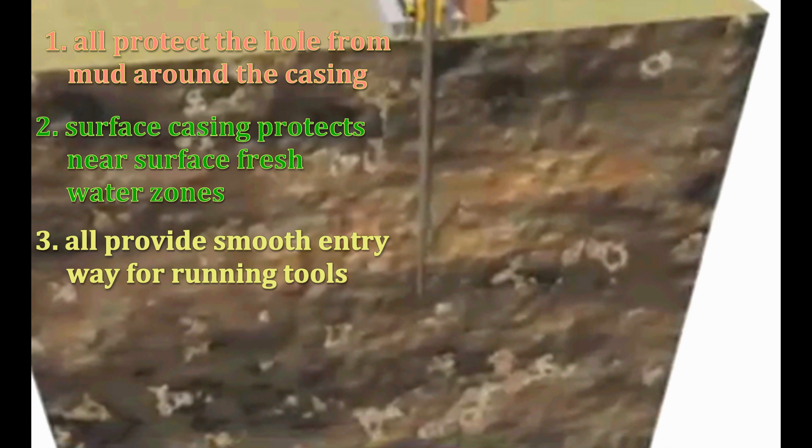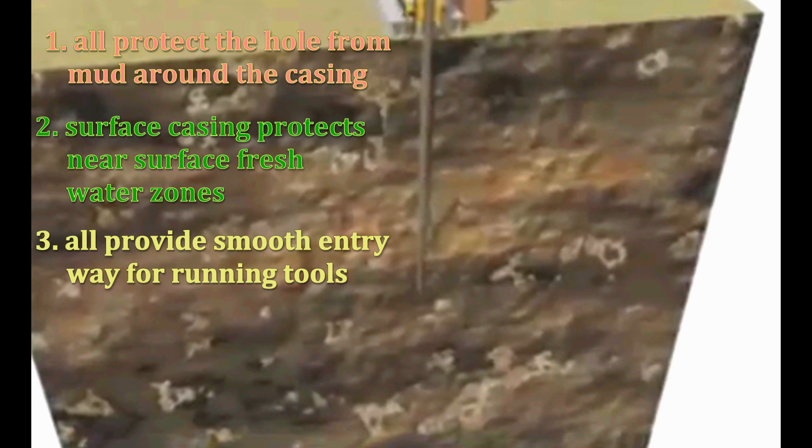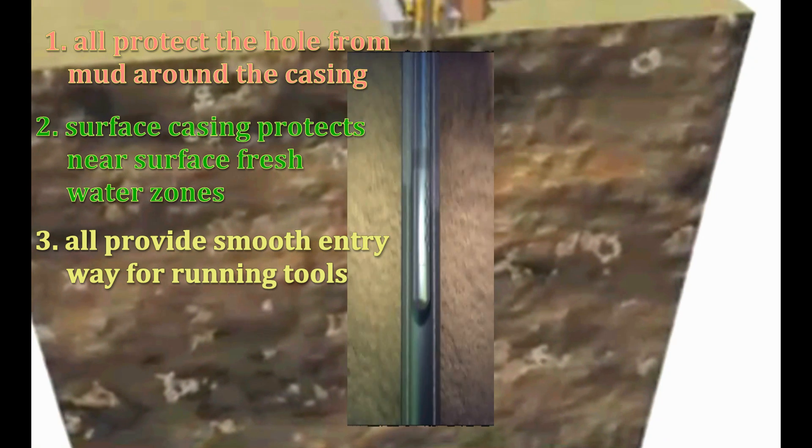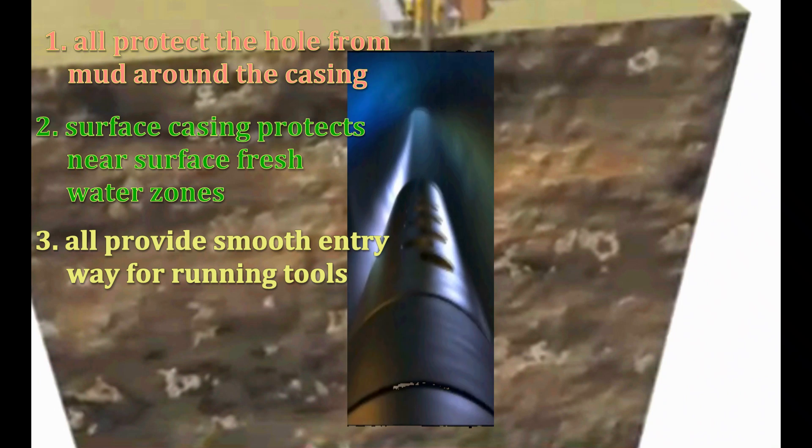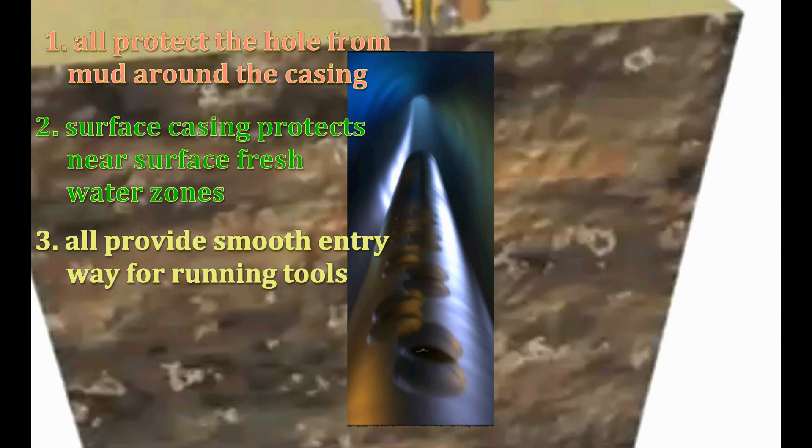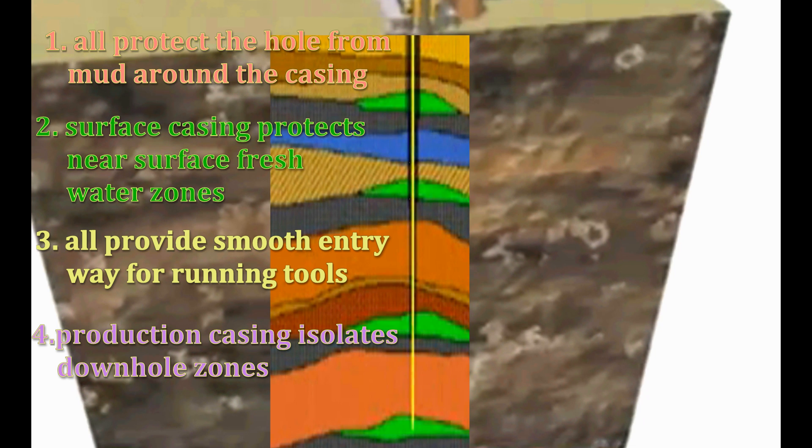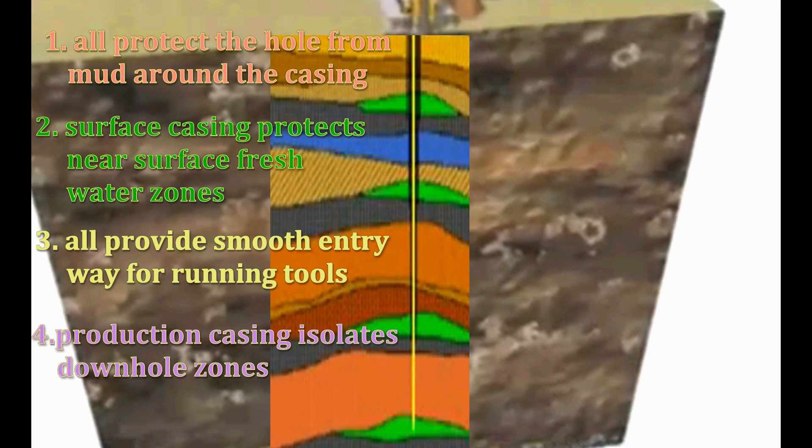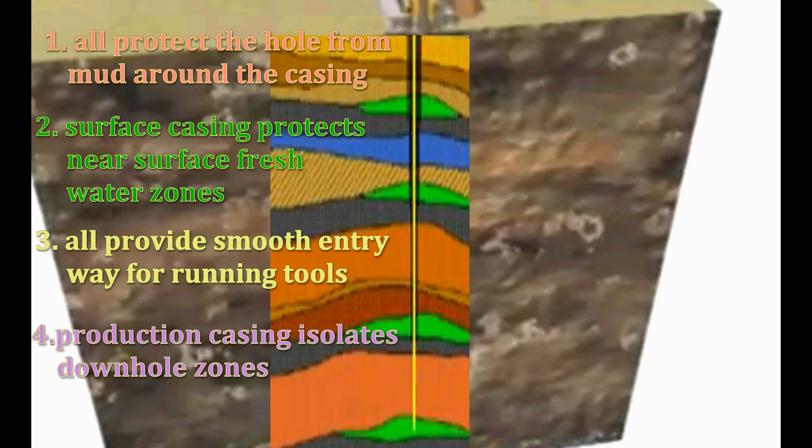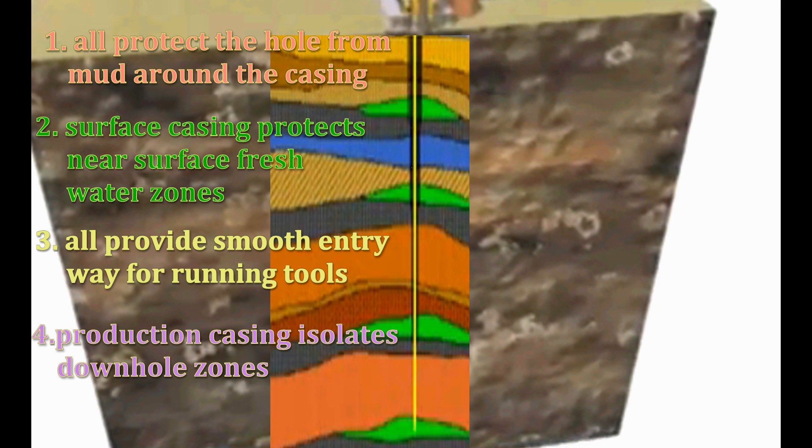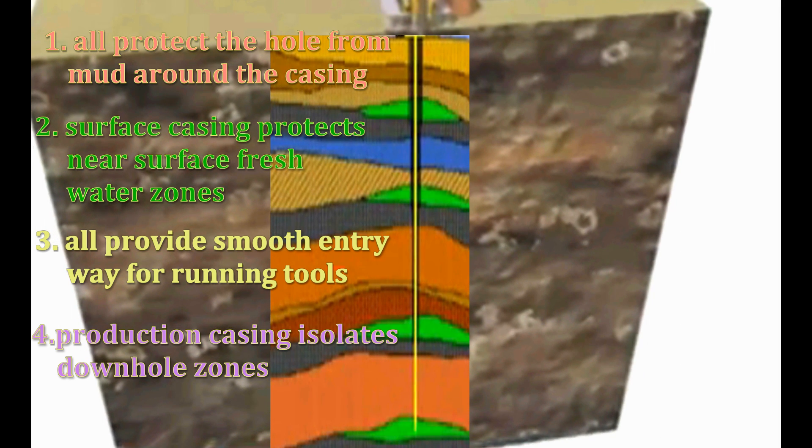Third, all three types of casing, the surface, the intermediate, and the production casing, provide a smooth entryway and path for running tools in and out of the hole. Finally, in production casing, its surrounding cement sheath isolates downhole zones so that the different zones can more easily be produced separately.